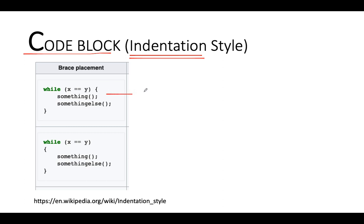The first one is called KNR and the second one is called Allman. The primary difference between the two is where the parentheses are placed.